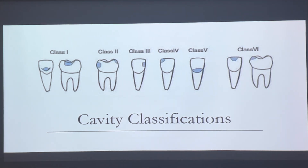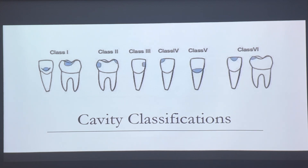We have our cavity classifications, and I'm going to do a separate PowerPoint for that because we're going to use a model and actually place the fillings in with composite. You have Class 1, Class 2, Class 3, Class 4, Class 5, and then later on they added Class 6, which is not caused from decay but actually from grinding the teeth — bruxism wearing off that first layer of enamel until you reach the dentin.